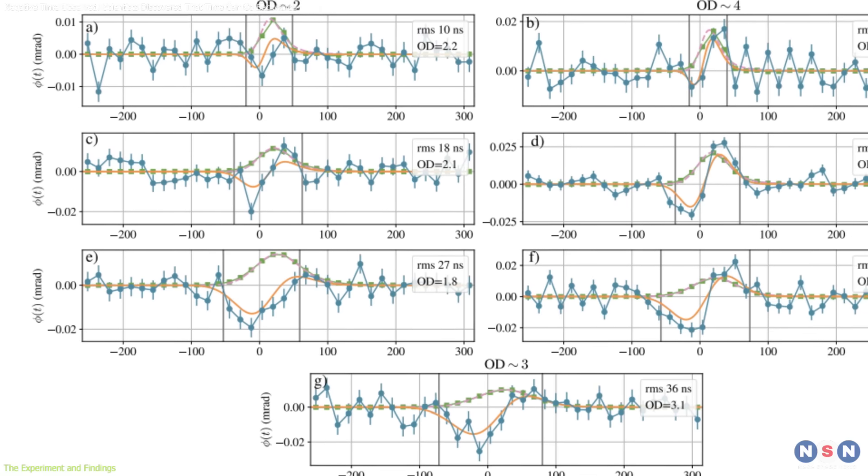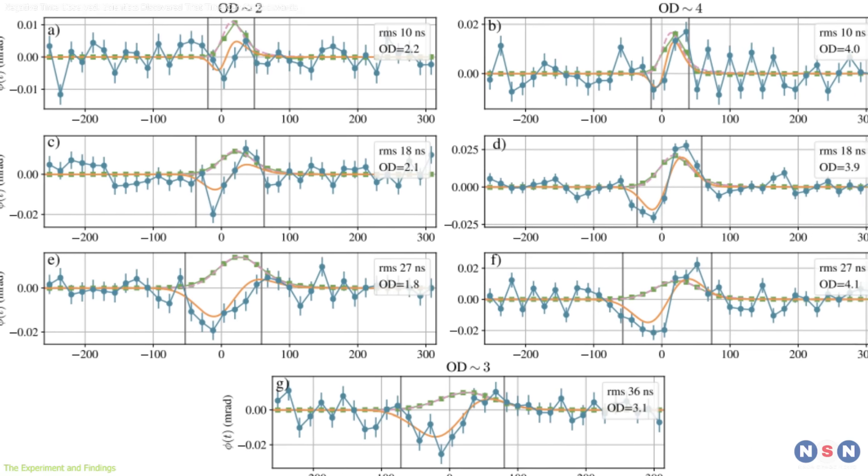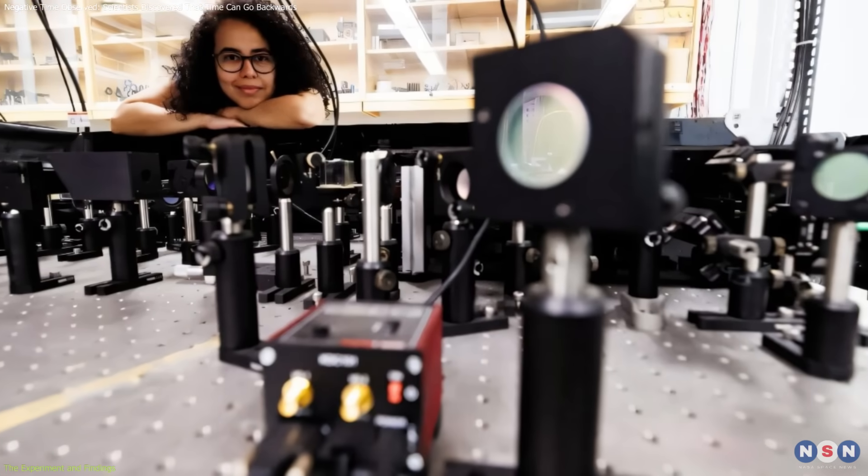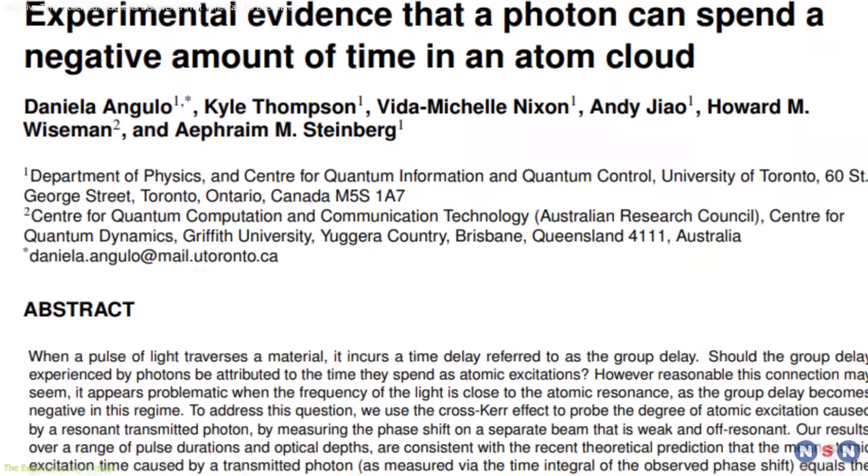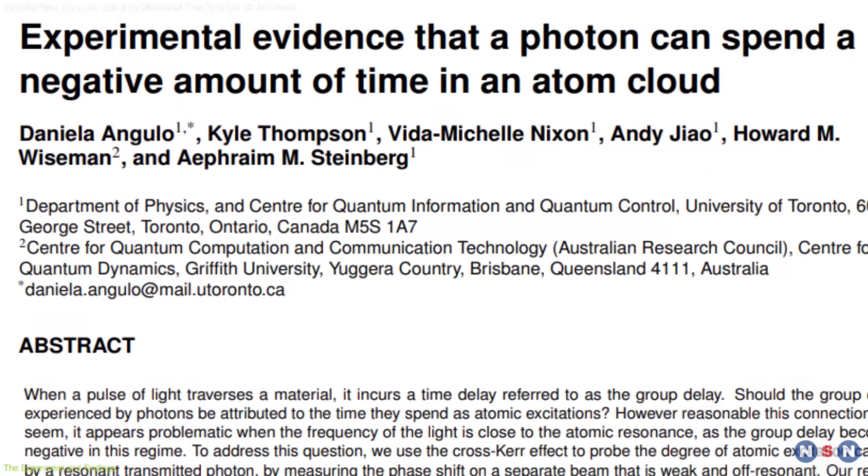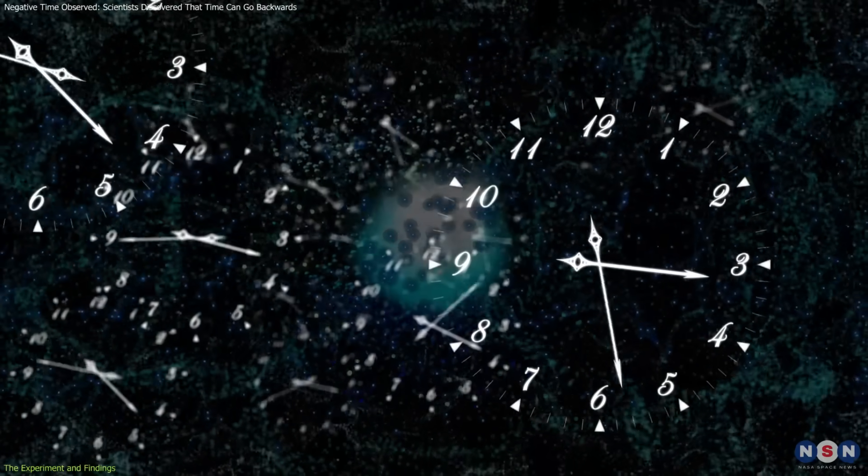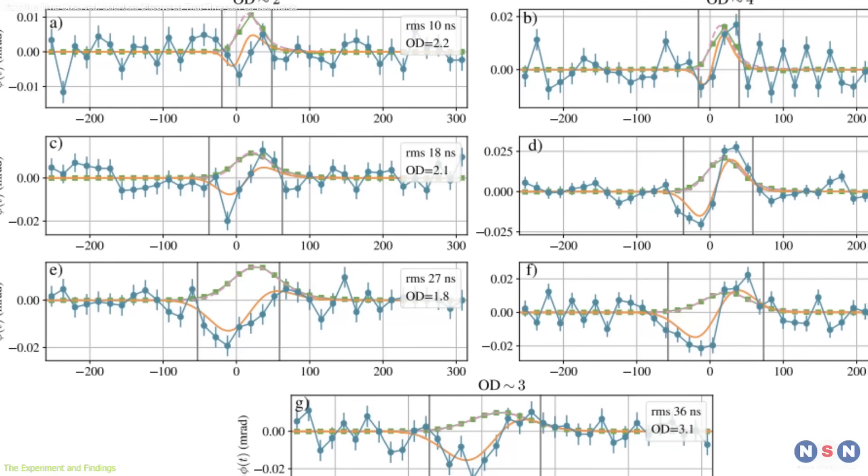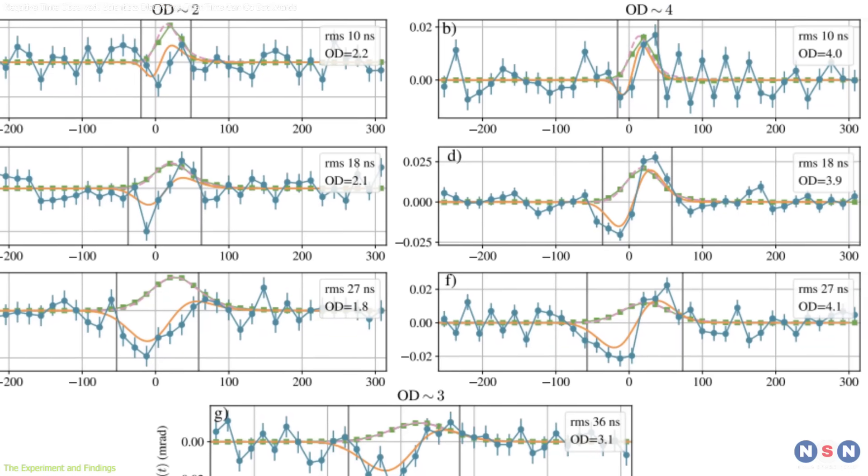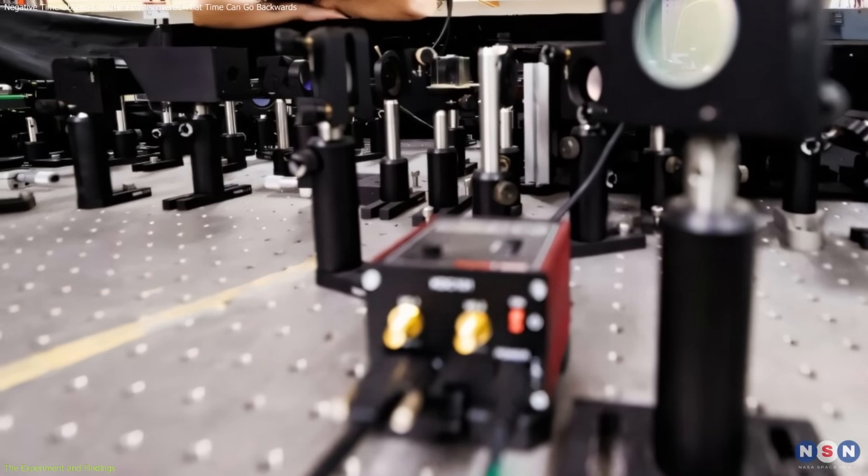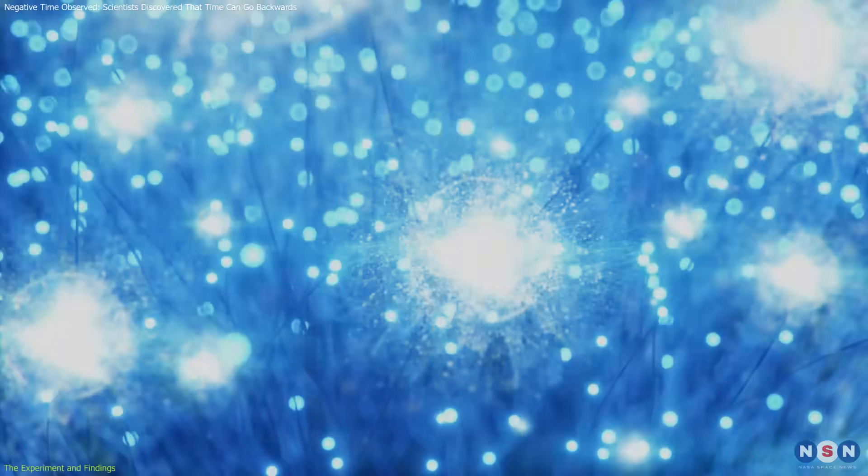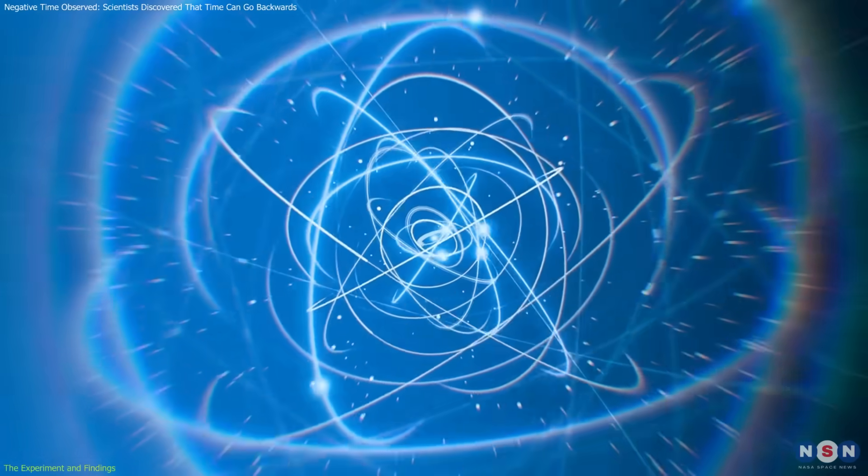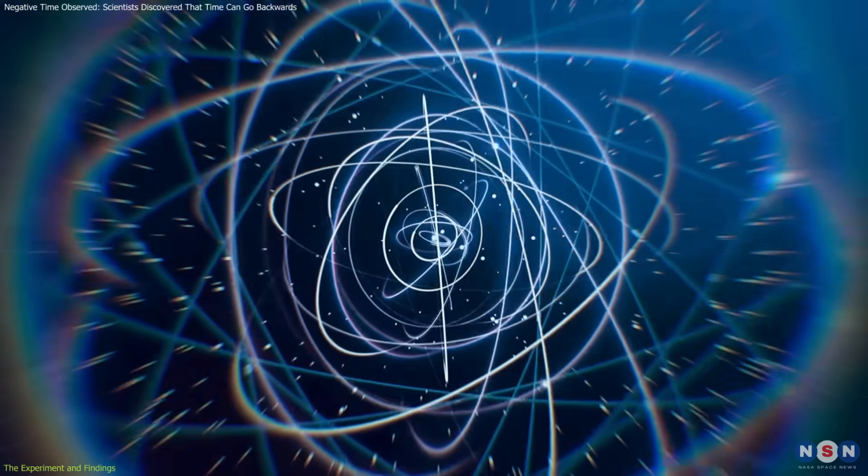The meticulous work involved precise measurements to rule out any experimental errors. Over two years, the researchers refined their methods to ensure the robustness of their findings. The novelty of this discovery lies in its experimental evidence. Although negative time has been theorized, this is the first time it has been observed and measured in a controlled environment. By showing that photons can spend negative durations in their interactions, this experiment opens the door to new ways of thinking about quantum mechanics.